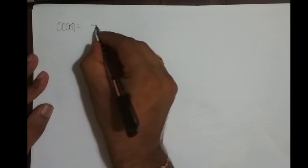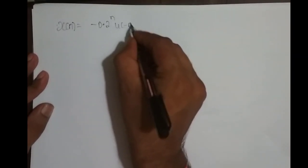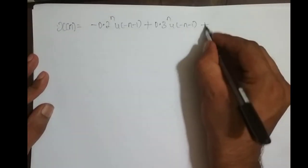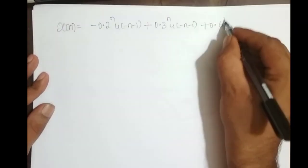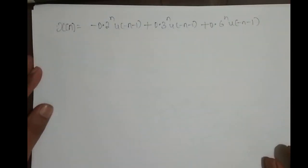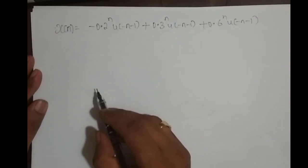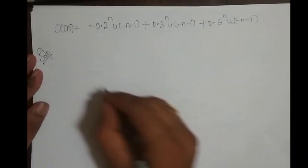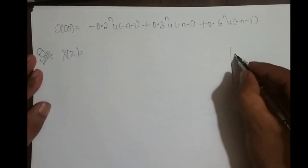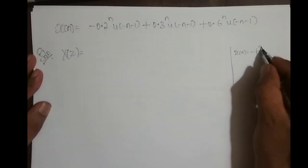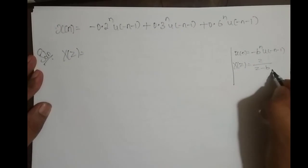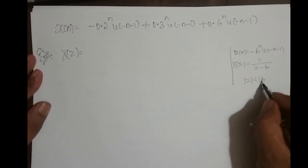Next example: x(n) = (−0.2)ⁿ u(−n − 1) + (0.3)ⁿ u(−n − 1) + (0.6)ⁿ u(−n − 1). We already have the standard result for this. The Z-transform of −bⁿ u(−n − 1) is Z/(Z − b), but its ROC is |Z| < |b|, i.e., inside the circle with radius b.